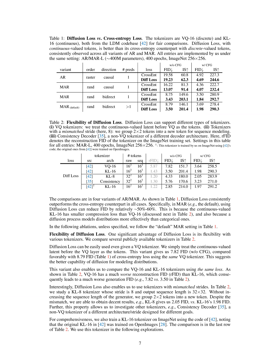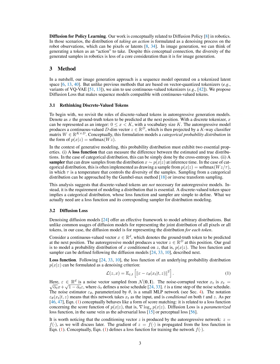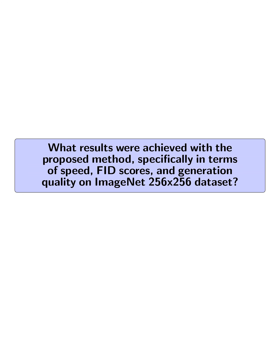The temperature parameter in the sampling process plays a crucial role in controlling the diversity and fidelity of the generated samples. The temperature parameter tau in the diffusion sampler is used to adjust the noise variance during sampling. By applying temperature sampling, the diversity of the generated samples can be controlled. The temperature parameter allows for fine-tuning the balance between exploration (diversity) and exploitation (fidelity) in the generated samples. The temperature tau is essential in the diffusion sampler, similar to its importance in cross-entropy-based models, and ultimately impacts the quality and diversity of the generated samples.